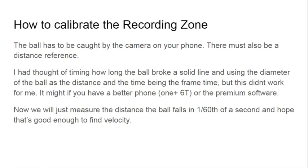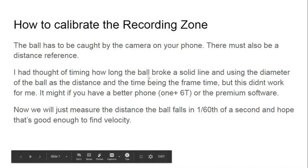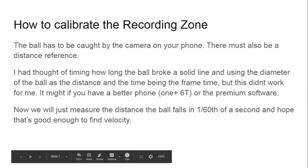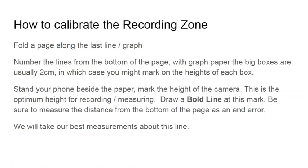Next is to calibrate the recording zone. In the video you saw the graph paper behind the ball — that's what we're talking about. I had thought about drawing a solid line, and when the ball fell through it, that would break the line for a certain amount of time, giving me the distance fallen by the ball and the time in number of frames. I have the measurement of the ball falling in 1/60th of a second, which gave me velocities to review.